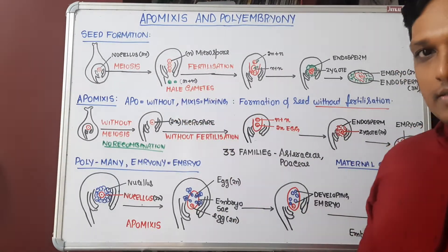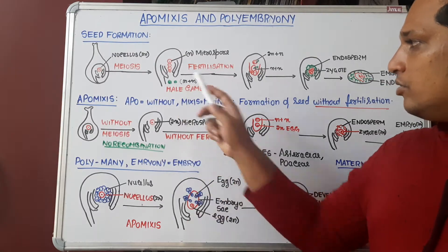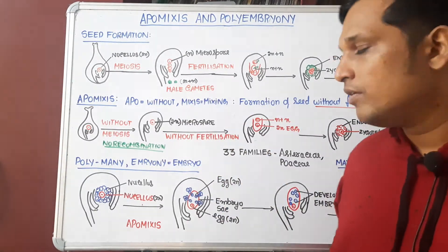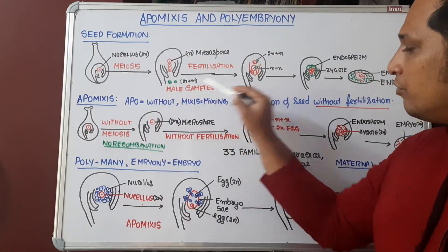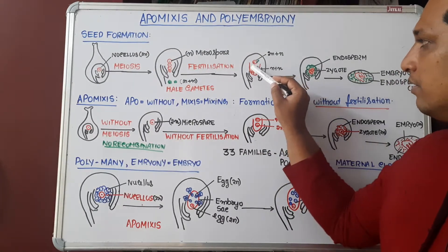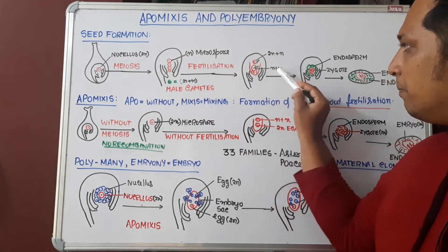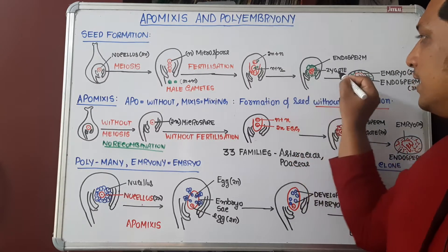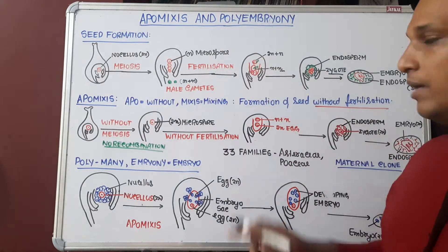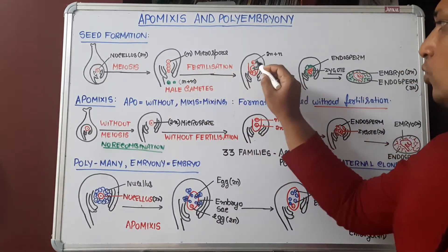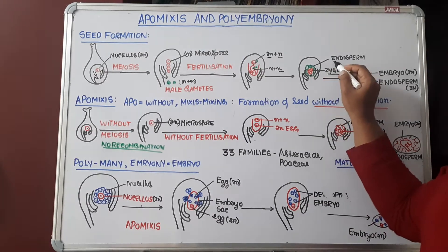Two male gametes are released with the help of the male gametophyte, that is the pollen grain. These two male gametes enter into the ovule and fertilize it. Out of the two male gametes, one fertilizes the egg — the egg is haploid (n), so n plus n gives a 2n zygote. The other male gamete fertilizes the central cell containing polar nuclei (2n), giving 3n, which develops into endosperm.